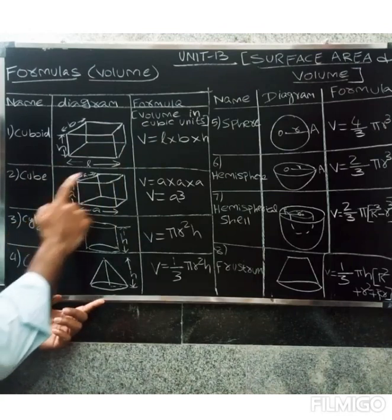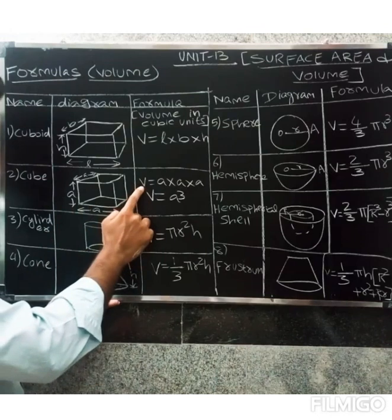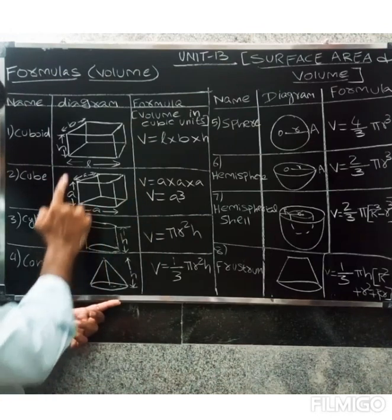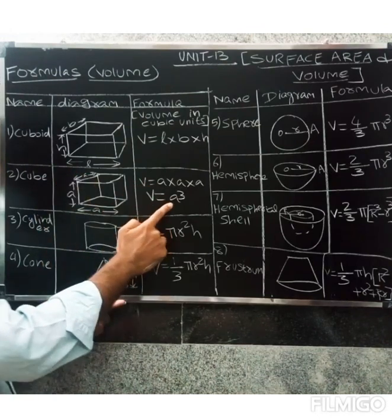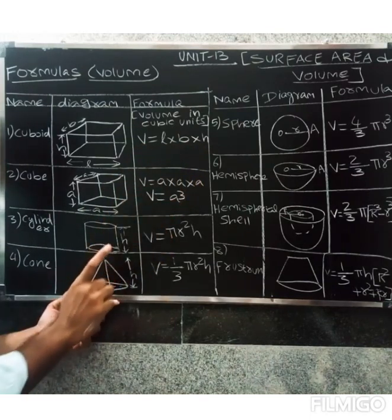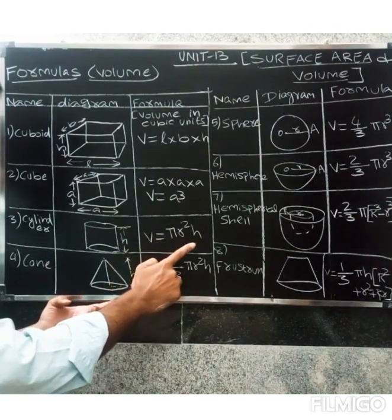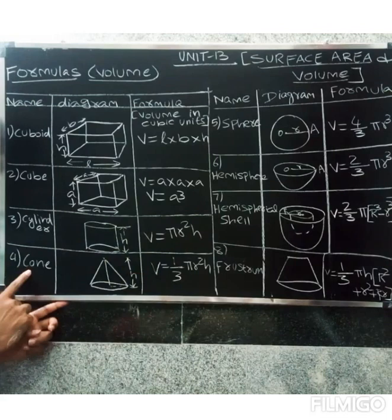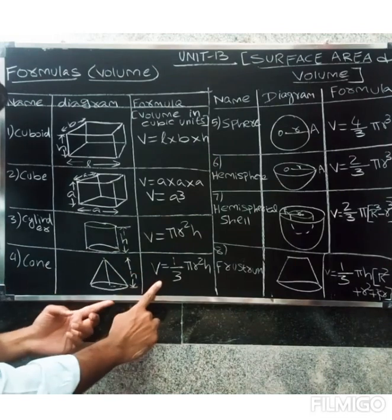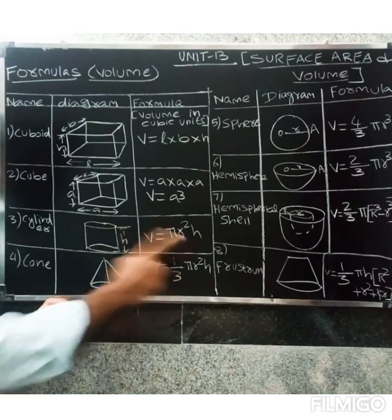Cube formula: V = a³. Third is the cylinder - cylinder volume formula is V = πr²h. Next is cone. Cone formula: V = 1/3 πr²h. So cylinder is πr²h, cone is 1/3 πr²h.